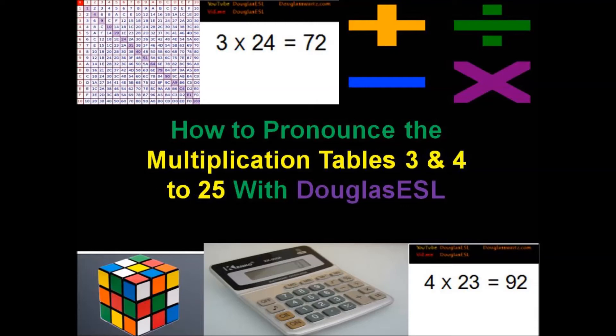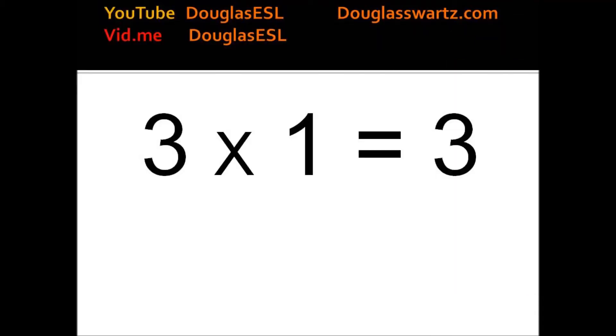How to Pronounce the Multiplication Tables 3 and 4 to 25 with Douglas ESL. 3 times 1 equals 3. 3 times 2 equals 6.